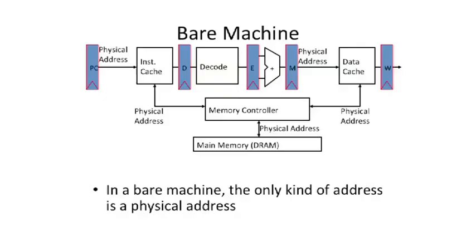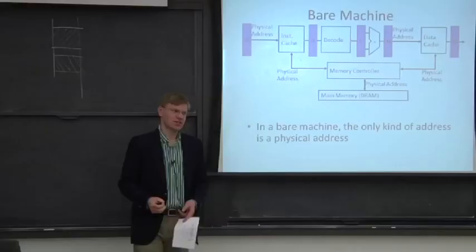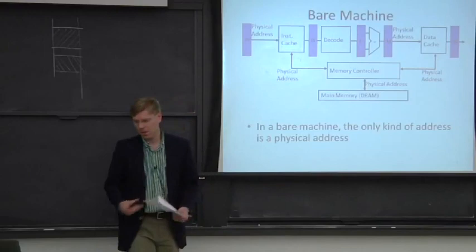So that's absolute addresses. If you have the physical hardware for an absolute address machine, it's simple — essentially what we've been looking at. You have your program counter, you stick it in your cache, the instruction cache gets the instruction out. You take your address for a memory access, stick it in your data cache, and get data out. On misses, everything is a physical address; it goes to the memory controller and out to DRAM. Seems simple, and it is — but as noted, it doesn't solve all the problems we want to solve.